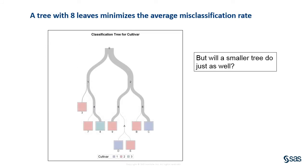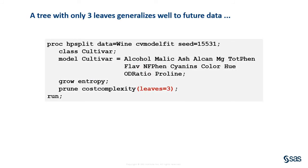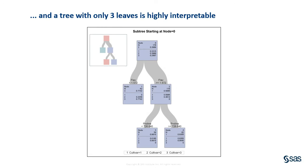In our example, the HP split procedure built a tree with eight leaves. A tree of this size minimizes the average misclassification rate. But you might be wondering whether a smaller subtree might do just as well. The procedure answers this question with an analysis of cost complexity. The plot shows that a tree with only three leaves will give you nearly the same misclassification rate. The statements shown here re-run the procedure requesting a final tree with three leaves. Not only does this tree generalize well to future data, but it is also highly interpretable because the rules for the leaf nodes are so simple.